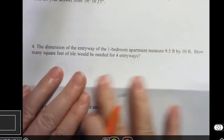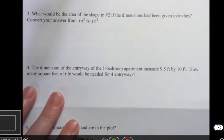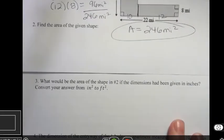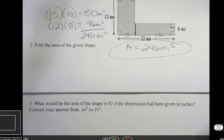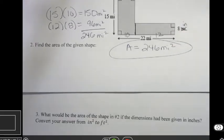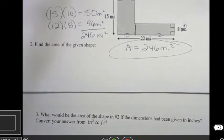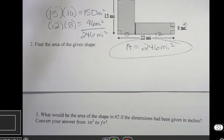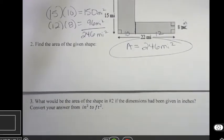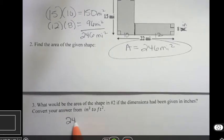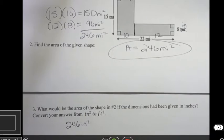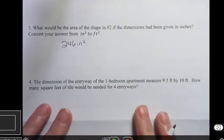Okay, a couple more on this one. What would be the area of the shape in number two? Well, that's the one we just did. So let me bring that back. For number two, we did this one. And now they're saying, what would be the area of that shape if the dimensions had been given in inches? So all I'm asking there is if this had said, instead of miles, had said inches, would that have changed our calculation in any way? No. But it would have changed our answer, because instead of having miles squared, we would have inches squared. So all I'm looking for there is that you would say, well, if this had been inches instead of miles, then I would have 246 inches squared if that's the dimension I've been working with.